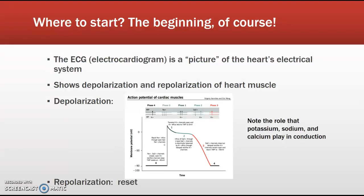So let's start with some physiology. What do you see when you're looking at an ECG tracing? You're looking at the electrical impulses traveling through the heart muscle over time. Specifically, you will see depolarization and repolarization of the heart muscle.